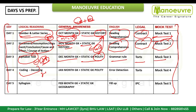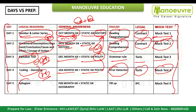Coding decoding — expect 3 to 5 questions here. Day 4: January month current affairs. Static GK — polity. Error detection English. Torts, mock 4. Day 5: Syllogism. February month current affairs. Static GK — geography. Fill in the blanks, IPC, mock 5.